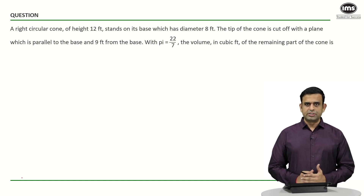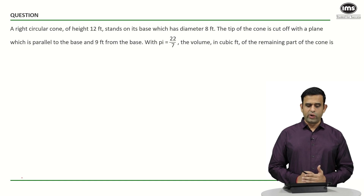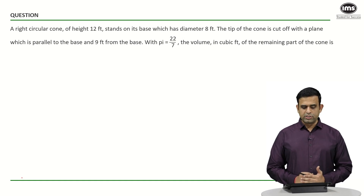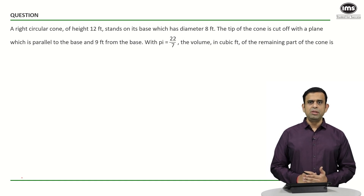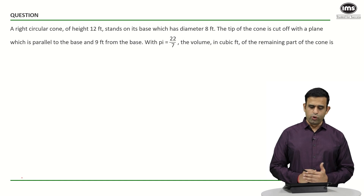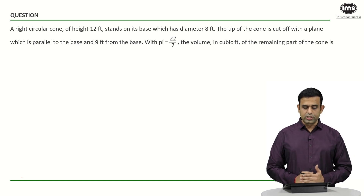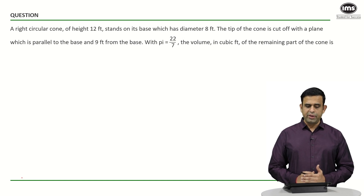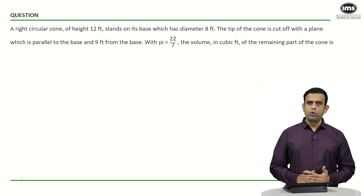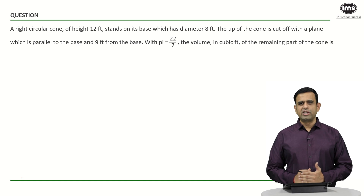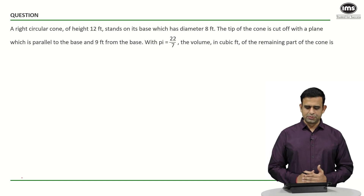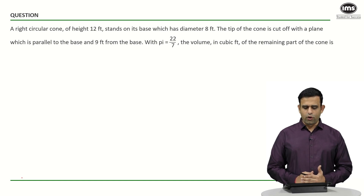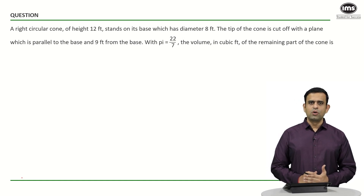In today's question, we have a right circular cone of height 12 feet that stands on a base of diameter 8 feet, which simply means the radius is 4 feet. The tip of the cone is cut off with a plane parallel to the base and 9 feet from the base, and we are told to take the value of pi as 22 by 7. The objective is to find the volume of the remaining part of the cone.